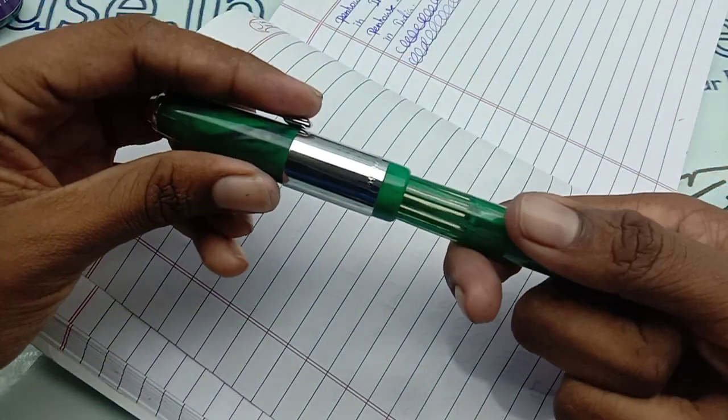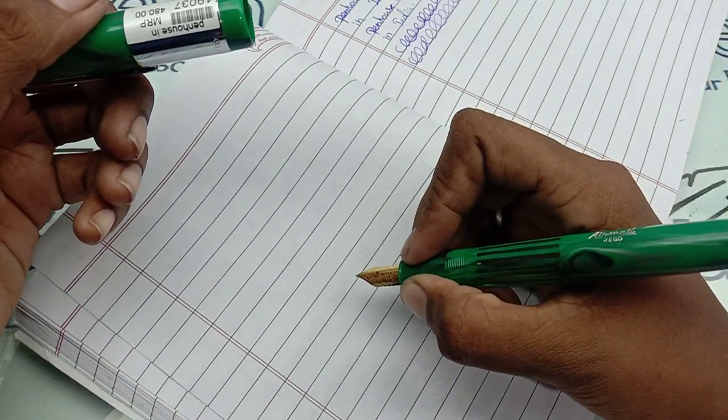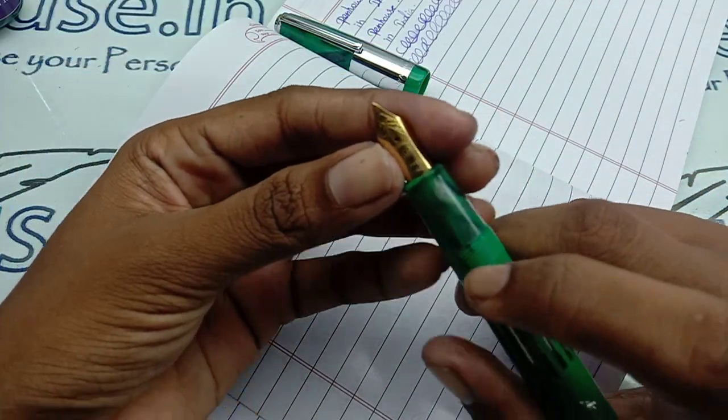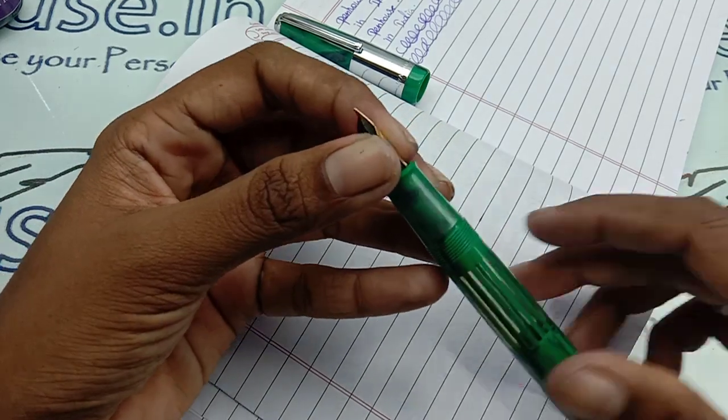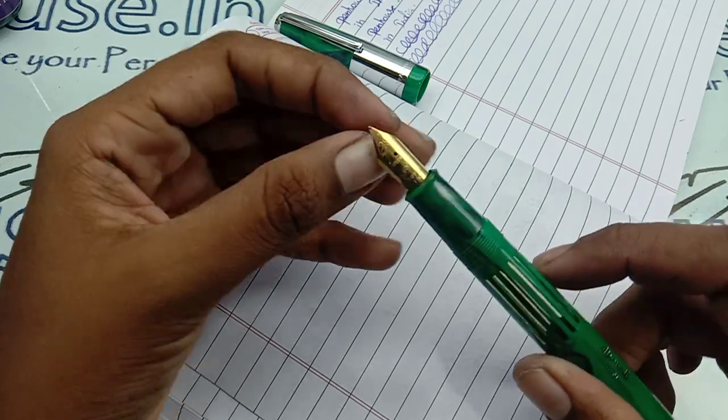This is a number 8 nib, and you can also use this with number 35 nib, as the feeder is so strong and thick. With number 8 and 35 we have different tips.